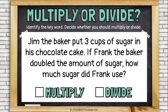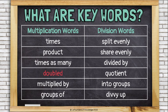Jim the baker put 3 cups of sugar into his chocolate cake. If Frank the baker doubled the amount of sugar, how much sugar did Frank use? Doubled — doubled means times 2. That's a multiplication word.